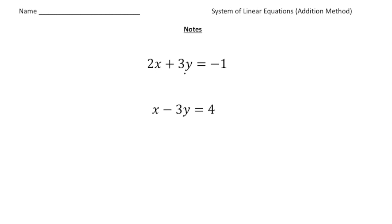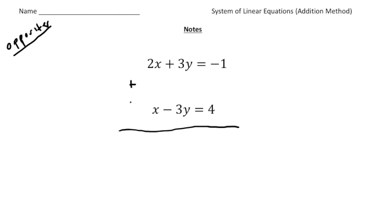For this problem we have 2x plus 3y equals negative 1, and then x minus 3y equals 4. If you notice, look at the y values — the 3y and the negative 3y. These are opposites. That's what you need to be looking for in order to use the addition method. I'm going to write over here 'opposites.' When you have opposites, you can add the equations together. So 2x and x gives us 3x. The 3y and negative 3y cancel out, and negative 1 and 4 adds up to 3. So we get 3x equals 3. Dividing both sides by 3, we get x equals 1.